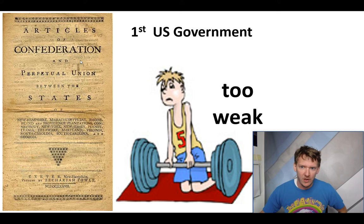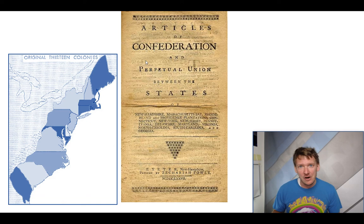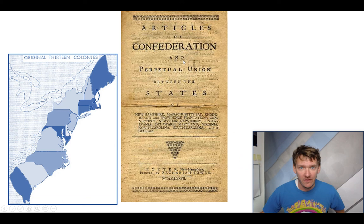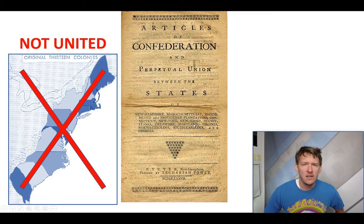The problem with it — or the strength of it, if you are a libertarian, minarchist, anarchist, or follow the Mises Institute — is that it's a strength. But for most people watching this, and for your AP test, you want to say that the Articles of Confederation is too weak. Well, why would they make this government so weak? Remember, it's an Articles of Confederation.